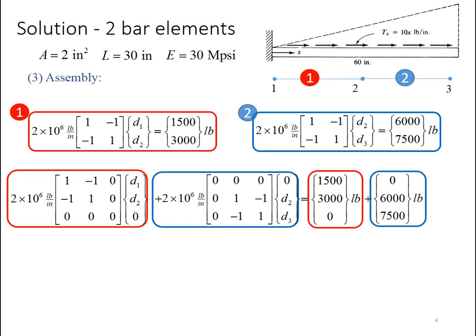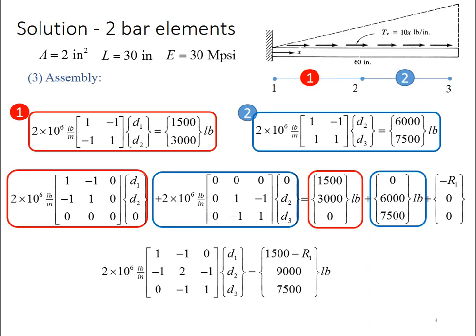I then add in the expression for, or the matrices for element 2. Here the first row and column are 0 because element 2 knows nothing about node 1, and similarly the first row of the force vector is 0. And of course, we don't want to forget to add in the reaction force, the point force vector, that is acting at x equal to 0, or node 1. Putting that all together, I get a single expression for global stiffness matrix and global force vector.